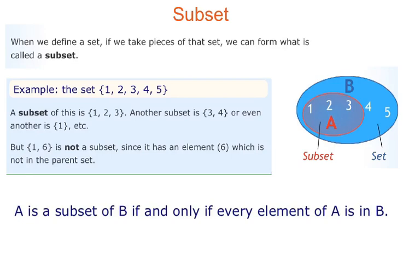But {1, 6} is not a subset — because six is not a part of the set, not a part of the parent set. A is a subset of B if and only if every element of A is in B. We write that as A with a C and a dash under it, meaning A is a subset of B.